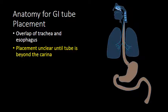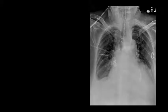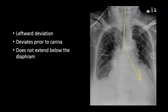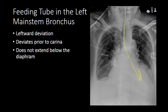Placement is unclear until the catheter passes beyond the carina, and sometimes the catheter will not go into the stomach but instead will go into the left main stem bronchus or the right main stem bronchus. Here we have an example of a catheter that was advanced beyond the carina. We can see that the catheter deviates to the left prior to the carina and does not extend below the diaphragm. This is a catheter coiled within the left lower lobe after intubating the left main stem bronchus.